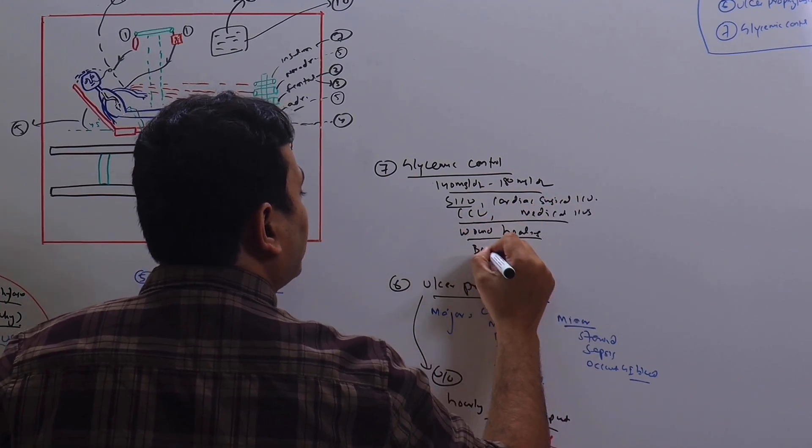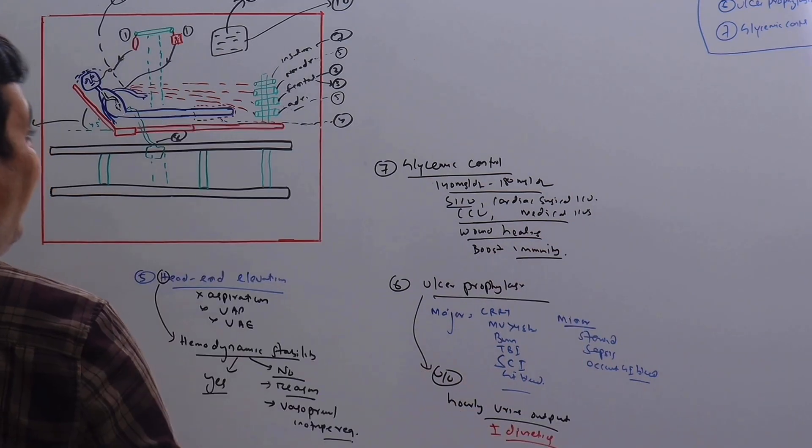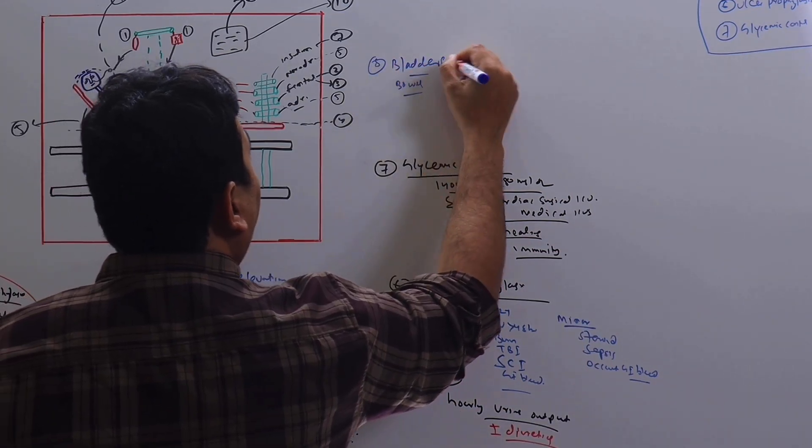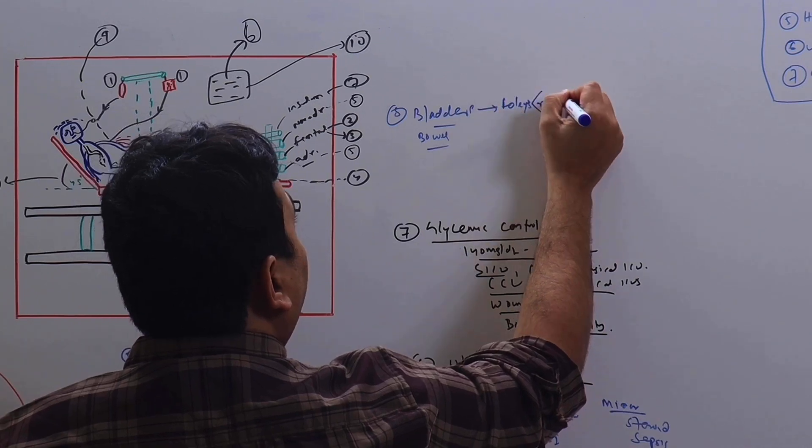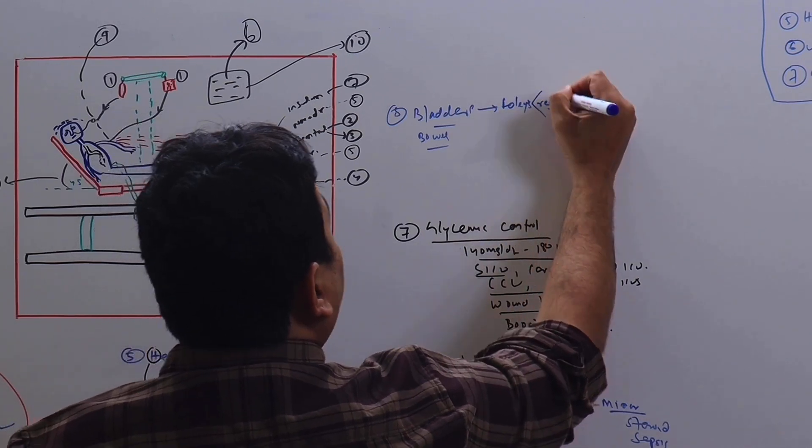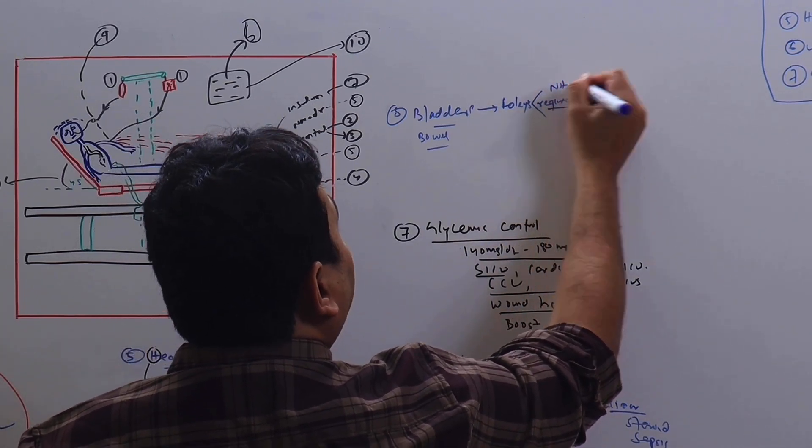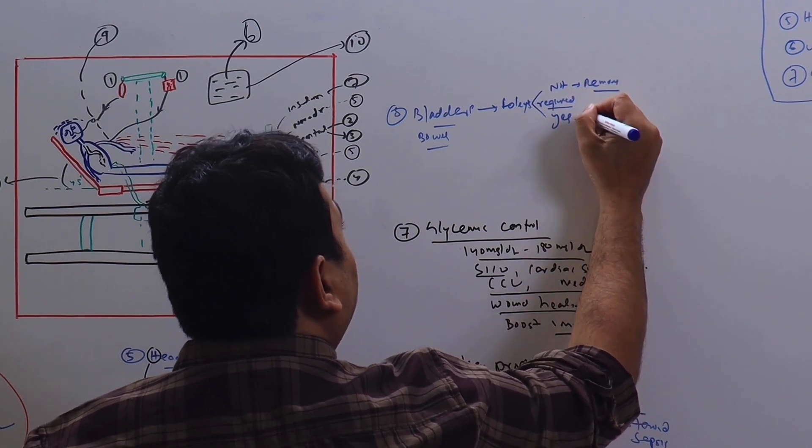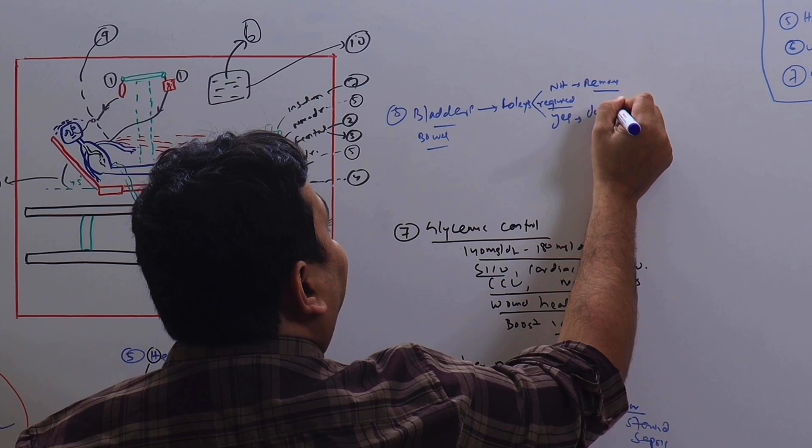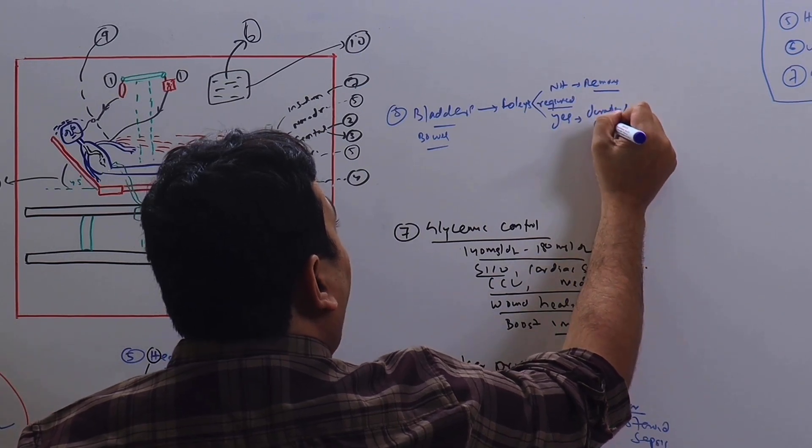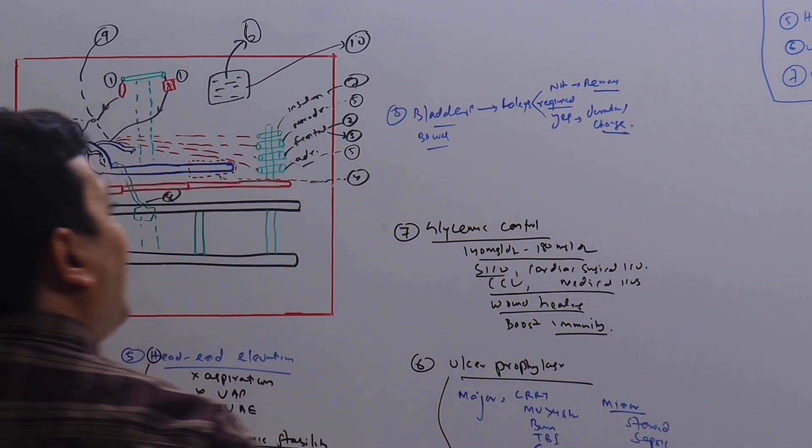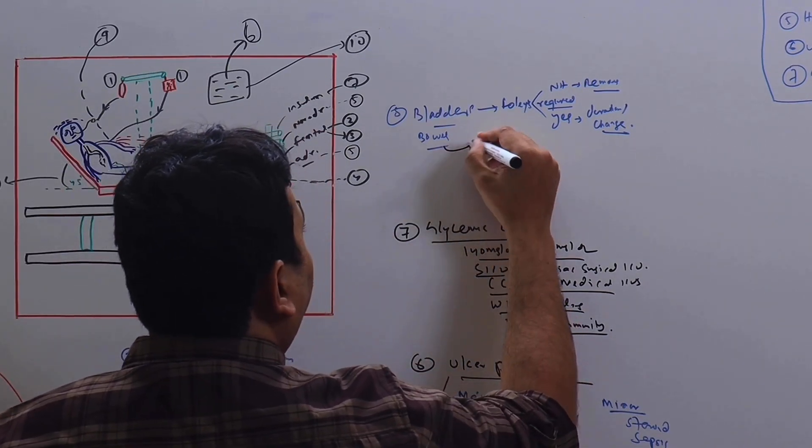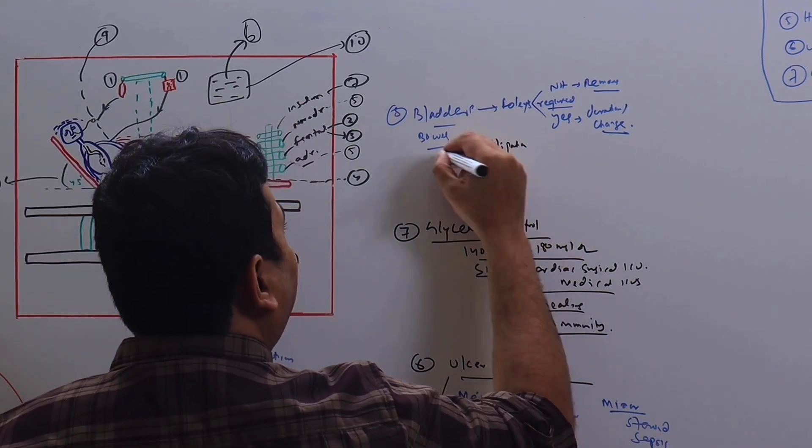Number eight is bladder and bowel. In the bladder part, the Foley's is there, so you have to answer the question: if it is required or not. If it is not required, then remove ASAP. If it is required, yes, then duration—whether it needs change or not—this thing we have to mention.